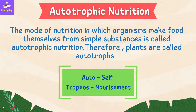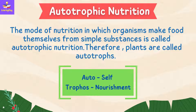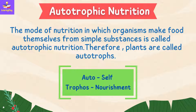The mode of nutrition in which organisms make food themselves from simple substances is called autotrophic nutrition. Therefore, plants are called autotrophs. Auto means self and trophos means nourishment.